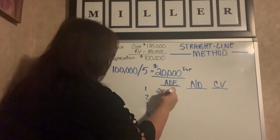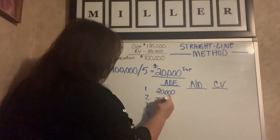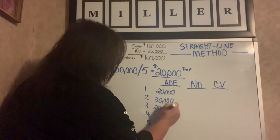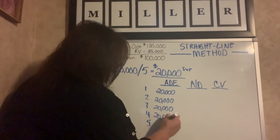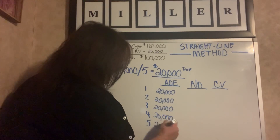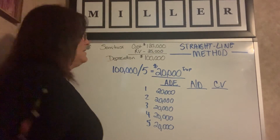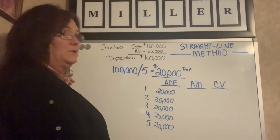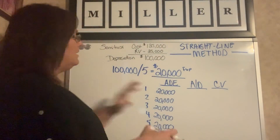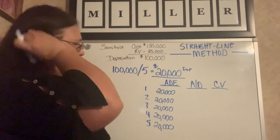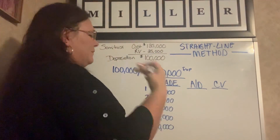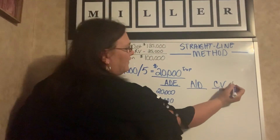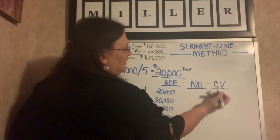We're going to do this evenly per year, so it's the same amount every single year. This $20,000 is your expense, so literally just write this down all five years: $20,000, $20,000, $20,000, $20,000, and $20,000. We're going to skip the accumulated depreciation column for now because for most people it's easier to remember that your carrying value is a subtraction column.